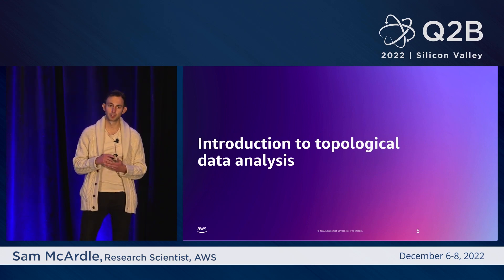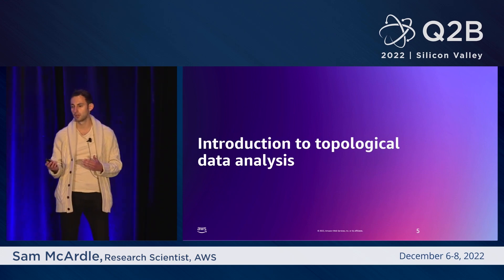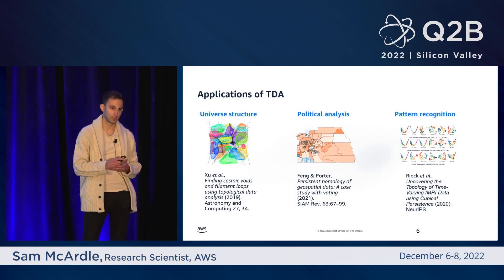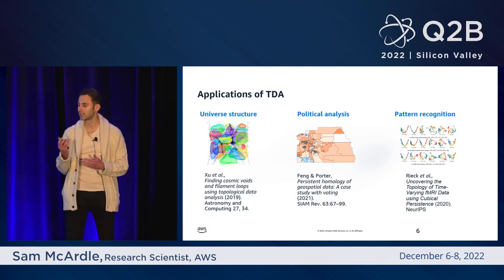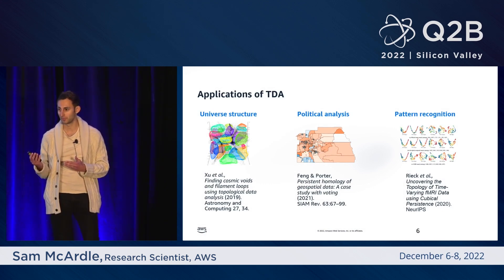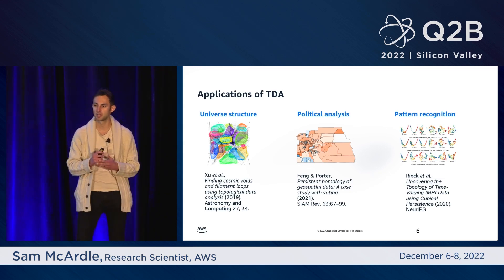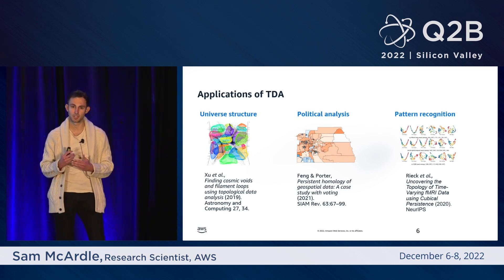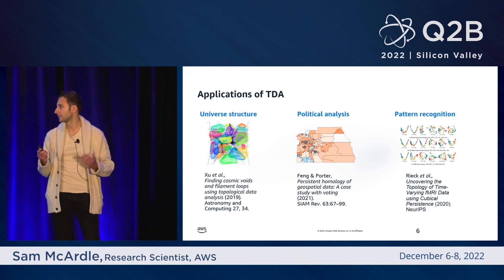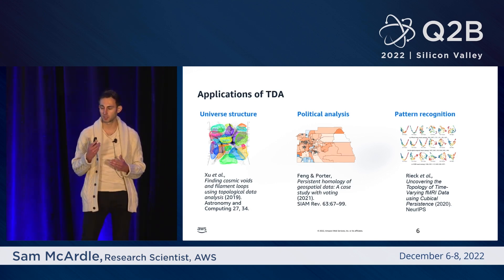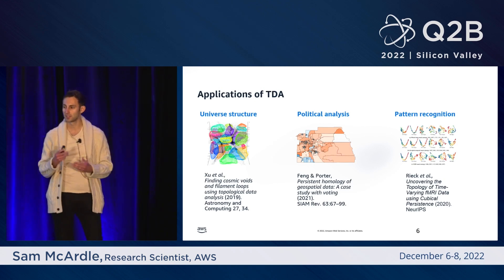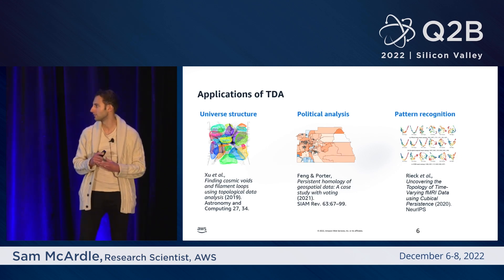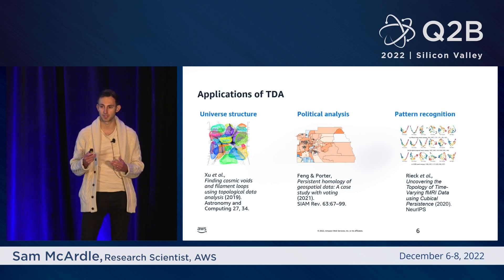In essence, what topological data analysis does is to extract some notion of the shape of the data, and it can be applied to a really wide range of problems. You can have scenarios where you really care what the topological features of your data are — for example, if you're running large simulations of how matter is distributed in the universe. On the other hand, you can consider scenarios where the extracted topological features don't have an obvious interpretation to us, but we still find that they are good descriptors from the data from the perspective of clustering using these features.